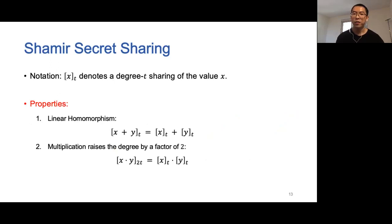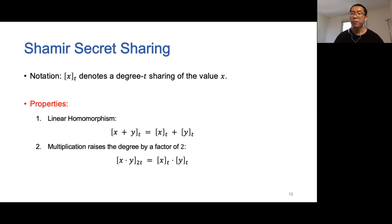Here are two properties of the Shamir secret sharing scheme. The first is linear homomorphism: adding two degree-t sharings [x] and [y] yields a degree-t sharing of the secret x+y. The second property is that multiplying two degree-t sharings [x] and [y] gives a degree-2t sharing of the secret x times y.